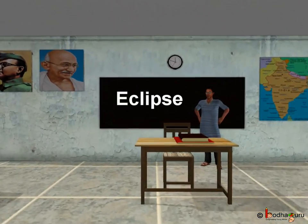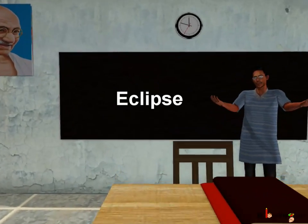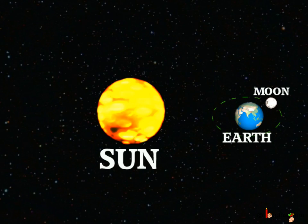Hello Kids! Today we are going to learn an interesting astronomical phenomena called as Eclipse. This phenomena occurs when the Sun, the Moon and the Earth in course of their movement come in a straight line. This happen in two ways. Let us look at each one of them.